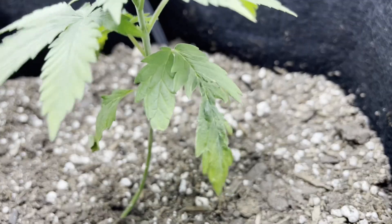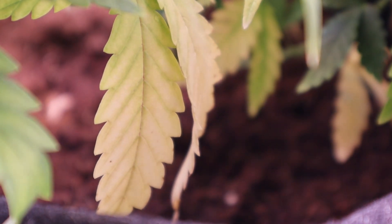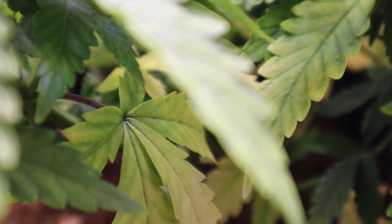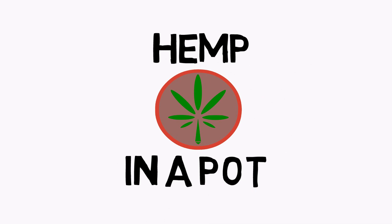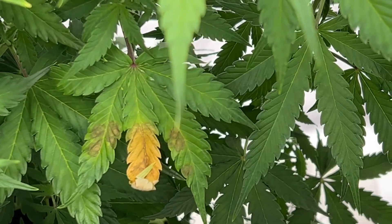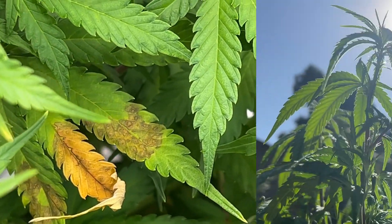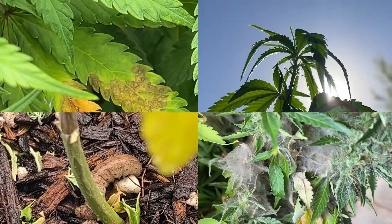While it's easy to tell when something might be wrong with your grow, pinpointing the problem is often much harder to do. So let's go over how to diagnose your sick plants. The first step is to figure out what type of issue you have: a nutrient issue, an environmental issue, a bug issue, or a disease.